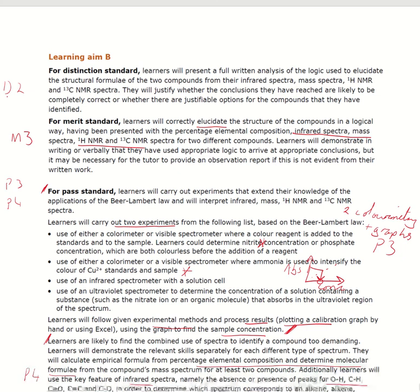Now, for the distinction, it's more or less the merit done better. So a full written analysis, again, work out the structure of the two compounds based on the four spectra actually given to you. But it's got this key difference within it. It will justify whether the conclusions they have reached are likely to be completely correct or whether there are justifiable other options for the compounds.